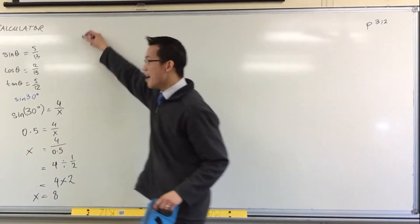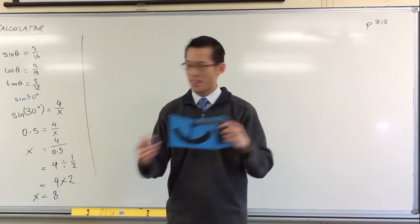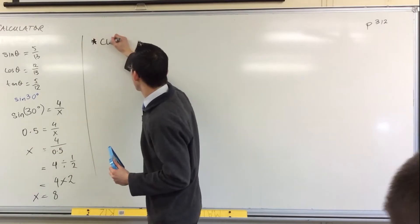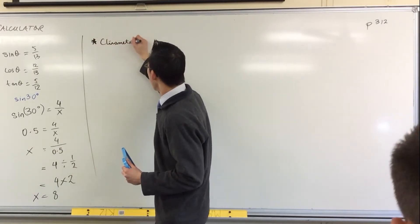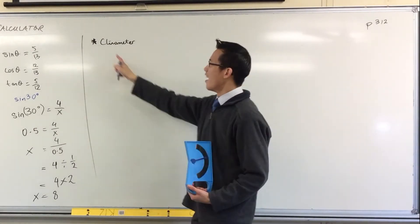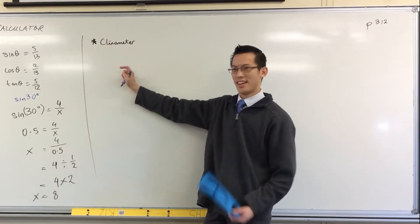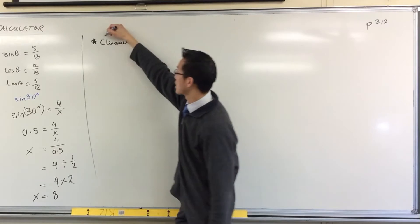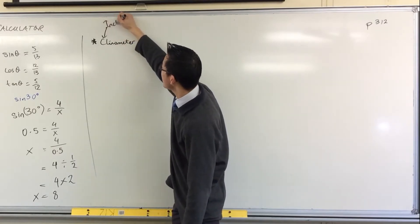What are these things? These things are called, you might see on there, it's called a... Everyone pronounces it differently. I call it a clinometer. I don't call it a clinometer because it comes from the same word where we get incline, right?